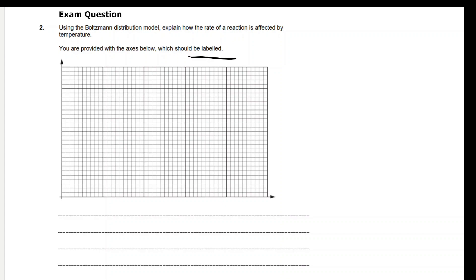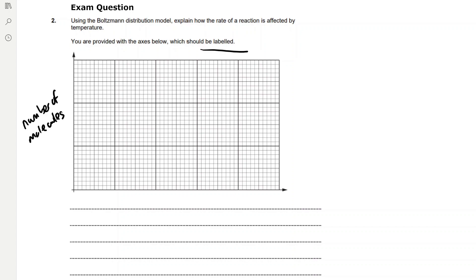On the y-axis, remember we have the number of molecules, and on the x-axis we have the energy. A Boltzmann distribution always starts at zero, zero, so the origin, and it increases like this, and then peaks and decreases. As the number of molecules increases, the energy decreases, so that's our lower temperature.